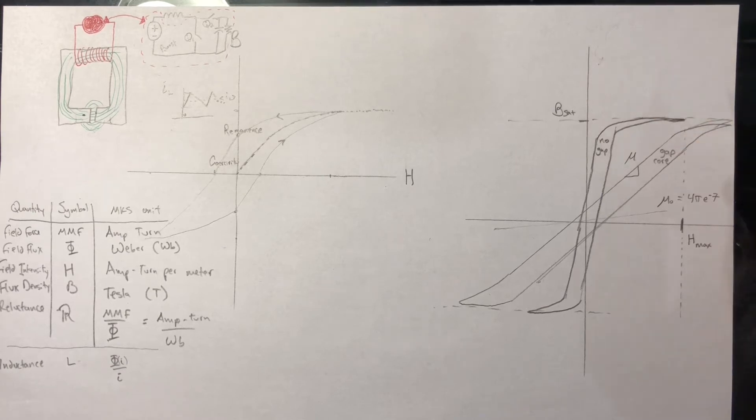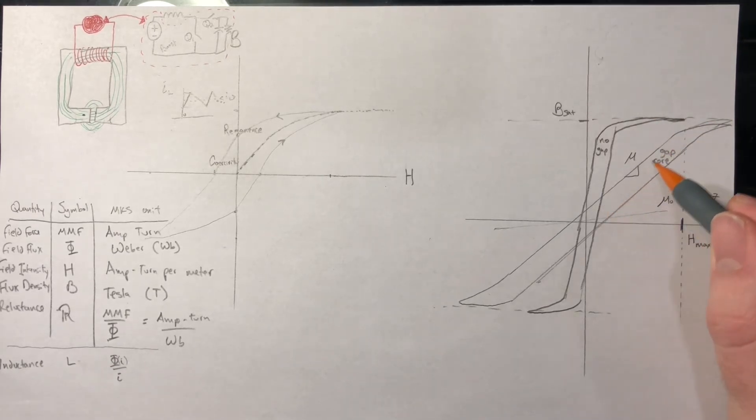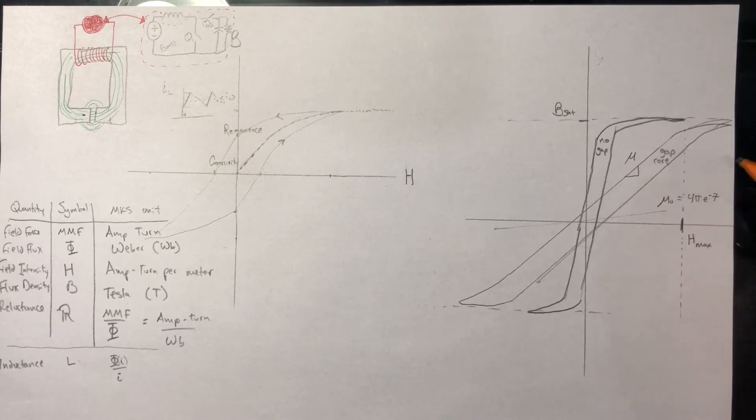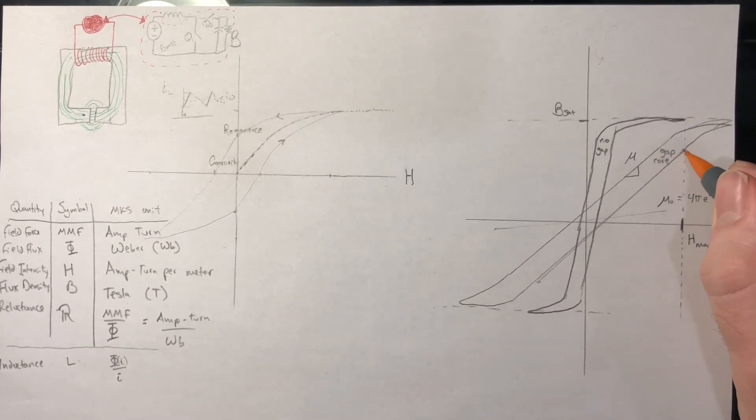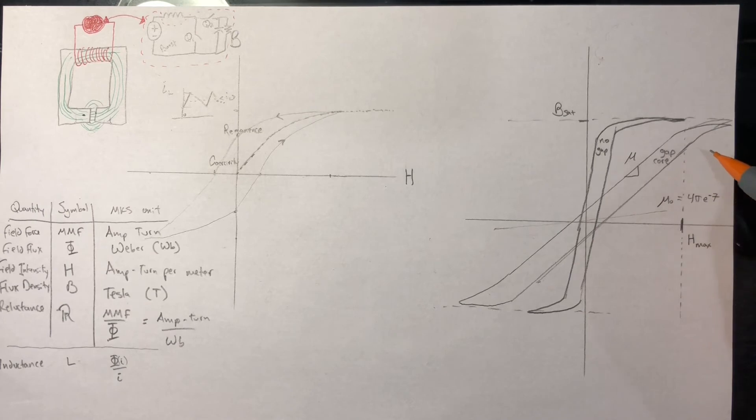But if we look at the curve with the gap, we can see that with our maximum excitation, we're still in this linear region where we're storing as much as we're expecting. So if we add the air gap, we allow for more storage of energy in the core before it reaches saturation.